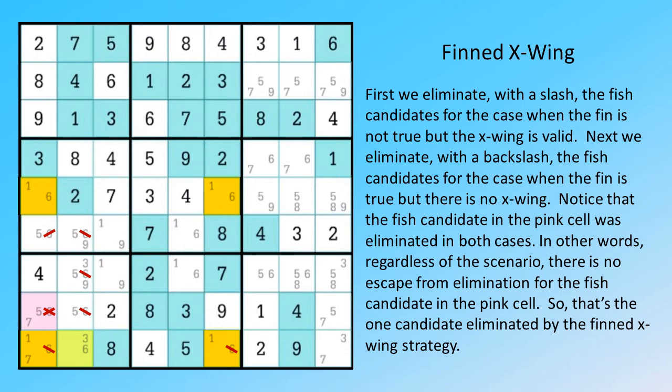In other words, regardless of the scenario, there is no escape from elimination for the fish candidate in the pink cell. So that's the one candidate eliminated by the finned X-Wing strategy.